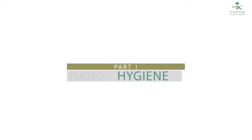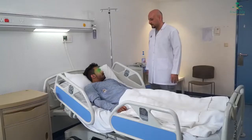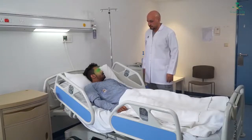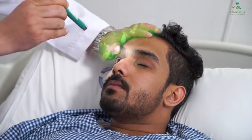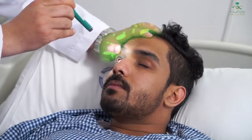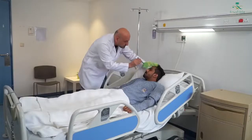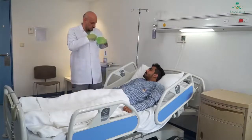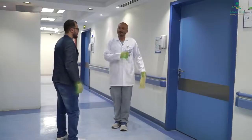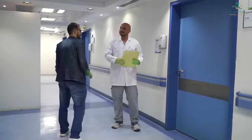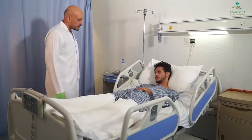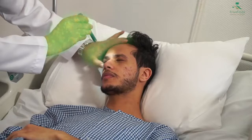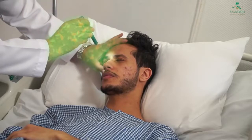Part 1: Hand Hygiene. Hands are the main pathways of germ transmission during healthcare. When healthcare workers fail to clean their hands between patient contact, germs in their hands can be passed from person to person and spread infection. Hand hygiene is therefore the most important measure to avoid the transmission of harmful germs and prevent healthcare-associated infections. Hand hygiene is considered the main part of the standard precautions that are the minimum infection prevention practices that apply to all patient care.